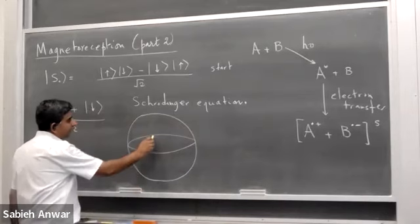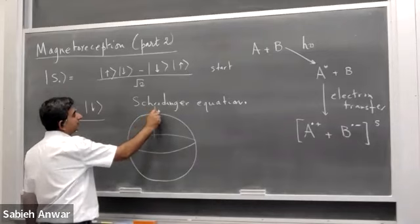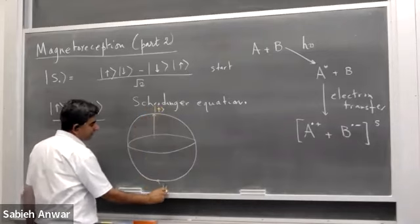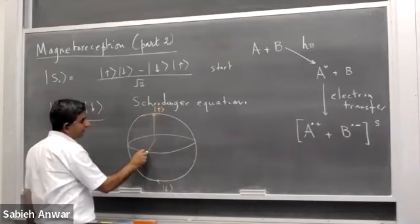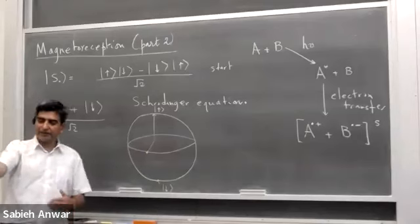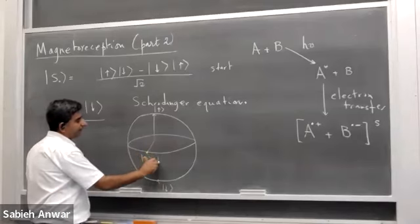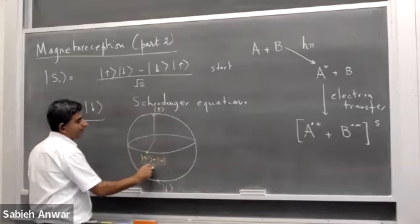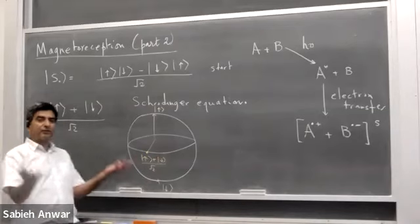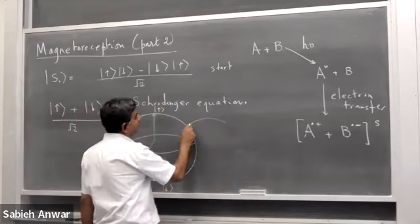The Bloch sphere is a hypothetical sphere on which quantum states live. At the north pole is the state of spin-up; at the south pole is spin-down. A point on the equator — pointing towards you — is the superposition state of spin-up and spin-down. So I'm representing the quantum states on this hypothetical sphere.